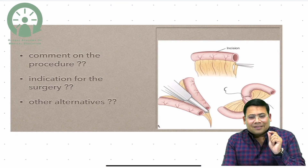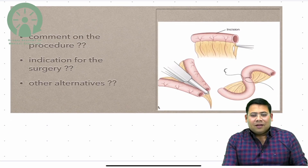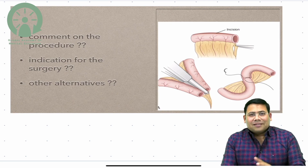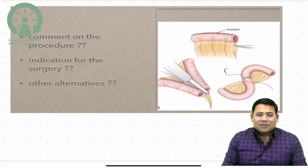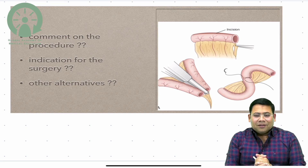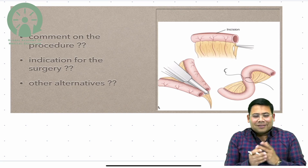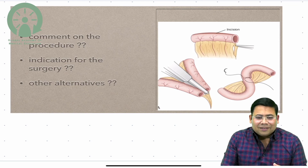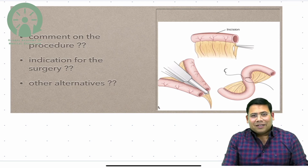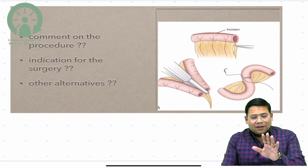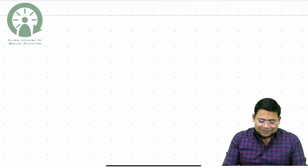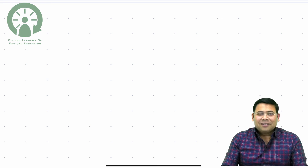So, the question of the day: you can see this is the treatment procedure, the bowel is getting divided and we are doing some lengthening, trying to increase something. What is this procedure? Comment on the indications and the other alternatives for this in the comment section below.